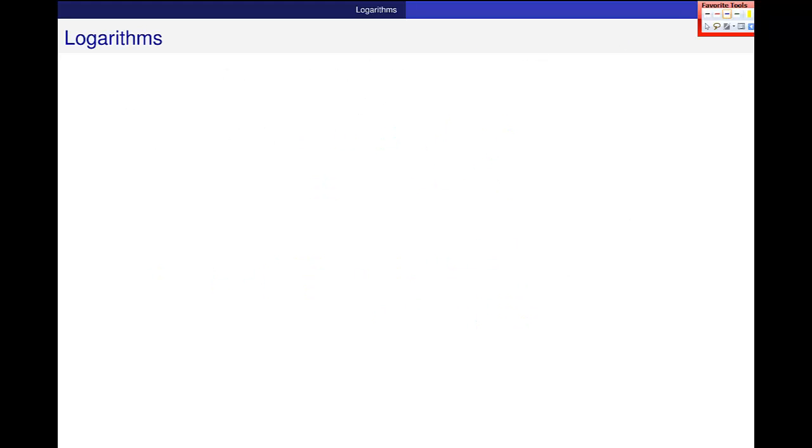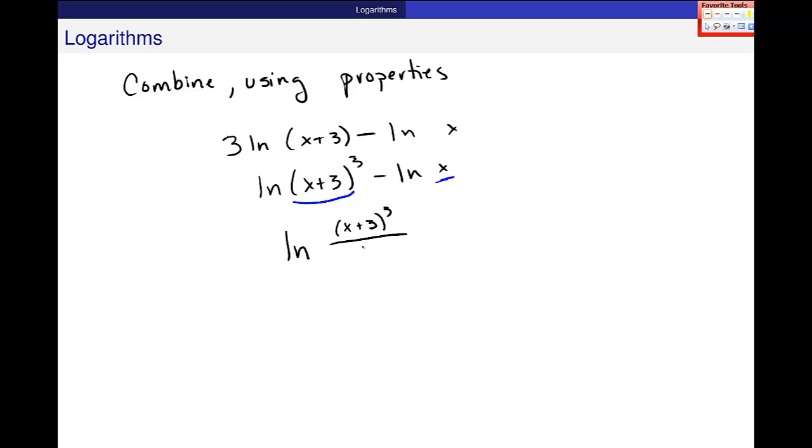Let's do some where we combine. So combine using the properties. So I have 3 natural log of (x plus 3) minus natural log of x. So the first thing that I want to do is bring this here back inside. And then when I have the subtraction between these two pieces, I can combine them into one log with division between these arguments right here. Not this whole thing in the second one, but x, right? So I have one log, and then (x plus 3) is in the numerator, and x is in the denominator.